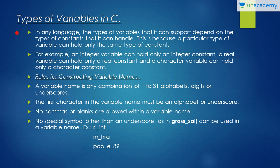In any programming language, the types of variables it can support depend on the types of constants it can handle. A particular type of variable can hold only the same type of constant. For example, an integer variable can hold only an integer constant, a real or floating variable can hold only a real constant containing a decimal point, and a character variable can hold only a character constant.